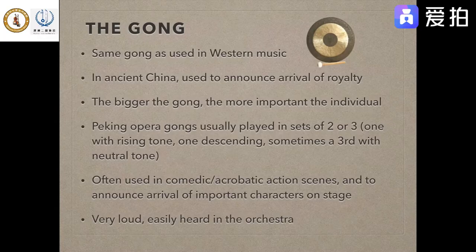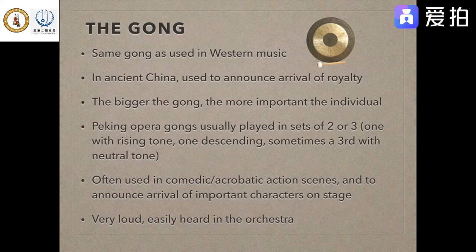In ancient China, gongs were used to announce the arrival of royalty — if you watch a lot of film scores, they'll have a single hit and then the royalty comes in. The bigger the gong, the more important the individual. Peking opera gongs are usually played in sets of two or three: one with a rising tone, one with a descending tone, and sometimes a third with a neutral tone. They're often used in comedic or acrobatic action scenes and to announce the arrival of important characters on stage.